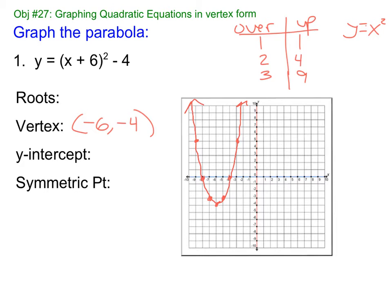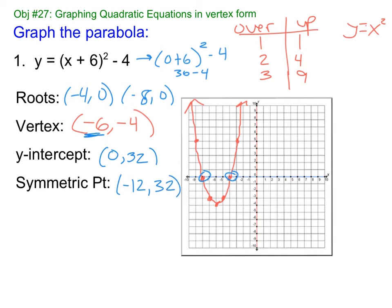Okay, so what are my roots? Roots are where this thing crosses the X axis. This crosses the X axis at negative 4 and negative 8. So negative 4 is 0, negative 8 is 0. The Y intercept, remember, is where X is 0. So when X is 0, what's the Y? If I plug in here, 0 plus 6 squared minus 4. That's 36 minus 4, which is 32. And then symmetric point, we double the vertex. So instead of negative 6, negative 12, 32. That's it.